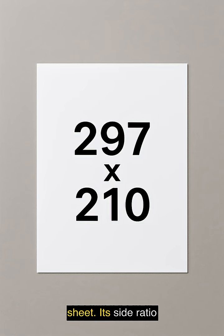This is an A4 sheet. Its side ratio is a special number, 297 to 210.